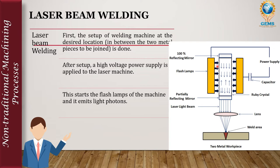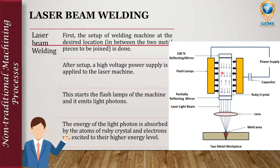Connecting the high voltage power supply starts the flash lamps of the machine, which emit light photons. These photons are incident on the ruby crystal rod. The energy of the light photons is absorbed by the ruby crystal, and electrons are excited to their higher energy level.